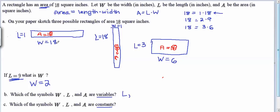And for W, we saw W could be 18 or W could be 1 or W could be 6 or W could be 2, and that given information that the area must be 18 square inches would still be met. So we can call W a variable. A, on the other hand, if we look at all the examples we did, A is always 18.